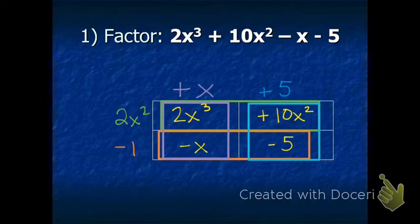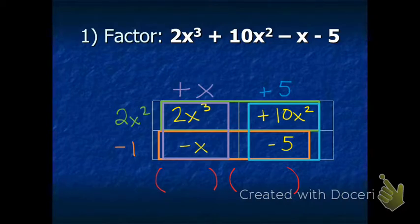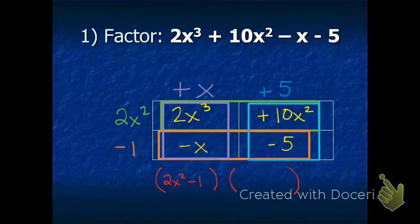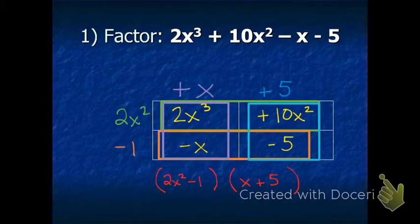Now, how do we write the answer? We make two sets of parentheses to write our binomials. We have one binomial of 2x squared minus 1, and the other binomial is x plus 5. We lead with the larger exponent, so 2x squared minus 1 comes first, and then x plus 5. You have factored the four-term polynomial: 2x to the third plus 10x squared minus x minus 5. Pause and write that one down, and then let's move on to the second example.